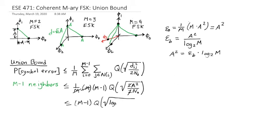And the A squared becomes energy per bit times log base two of M. I'm going to write this log base two of M out front. And then the Eb over N naught. And that's it. That's our expression for the probability of symbol error with M-ary FSK.